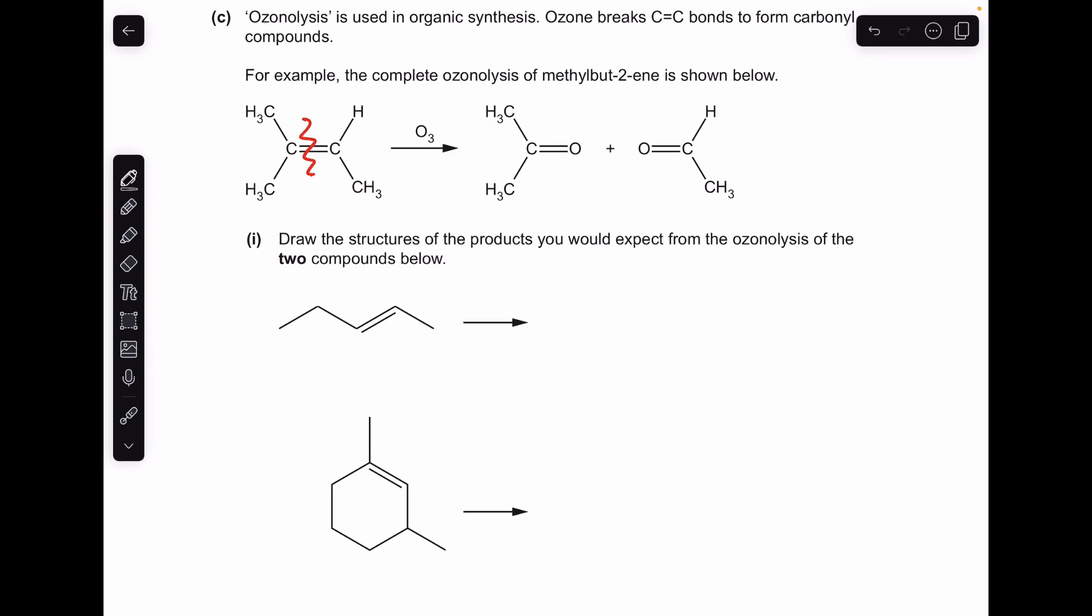Moving on to part C, so this is the unfamiliar stuff. So we've got some information about ozonolysis. I've already written a zigzag line there through that carbon-carbon double bond. So you can see when the carbon-carbon double bond breaks, basically we just put a carbonyl group onto this carbon here, and the other one as well, and whatever is already bonded to the carbon stays there. Okay, so we'll just do the same with the others. So there's the first one.